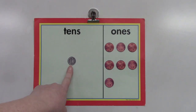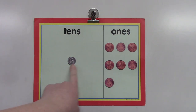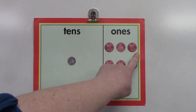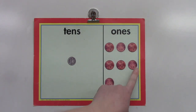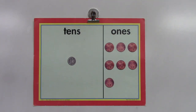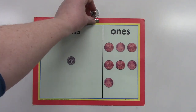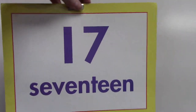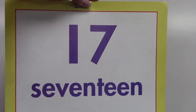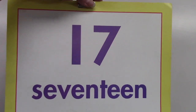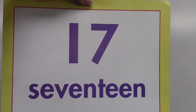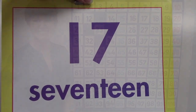Let's count it: 10, 11, 12, 13, 14, 15, 16, 17. Is 17 an even number or an odd number? That's right — it's an odd number because it ends with a seven.